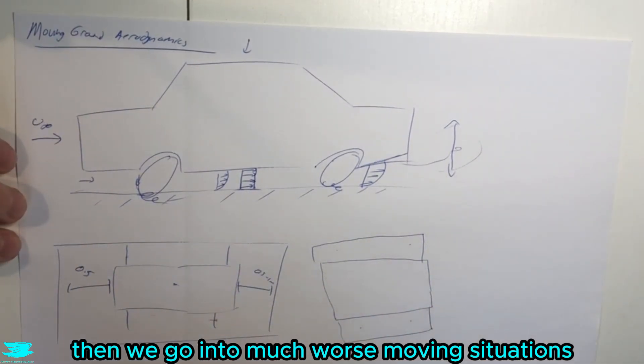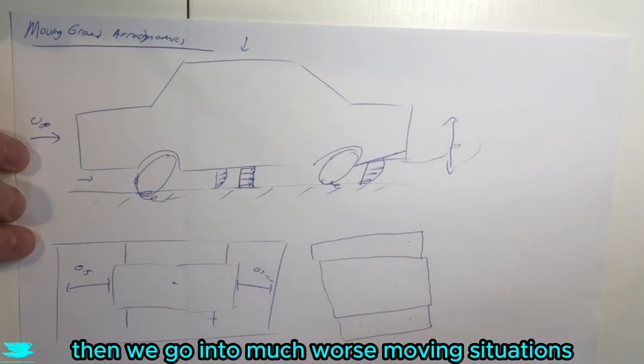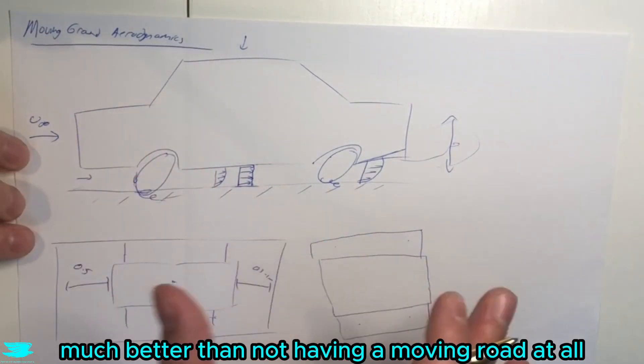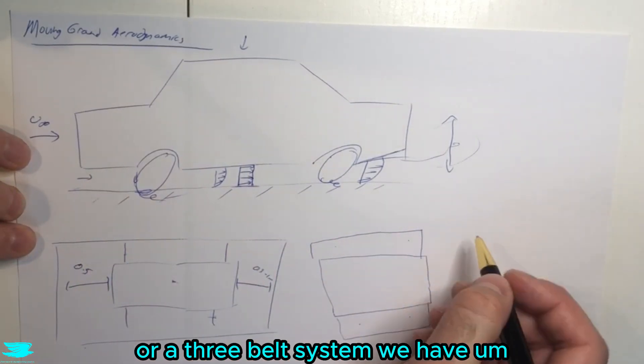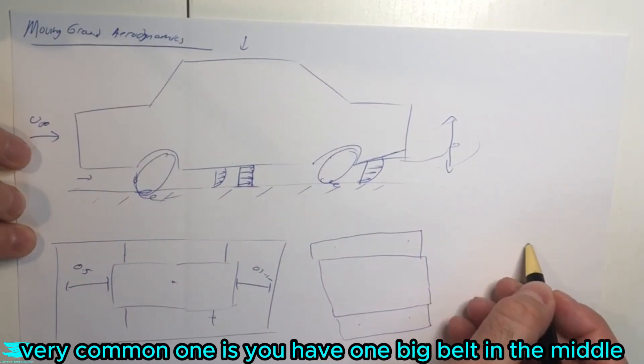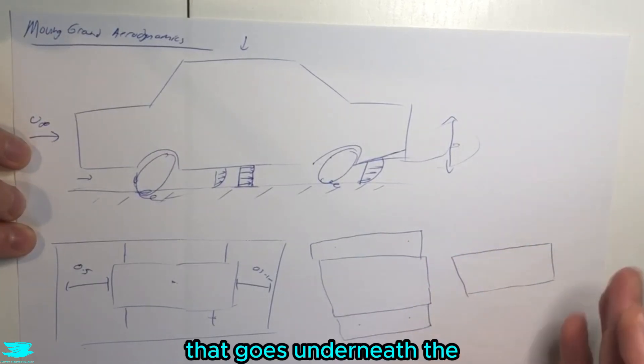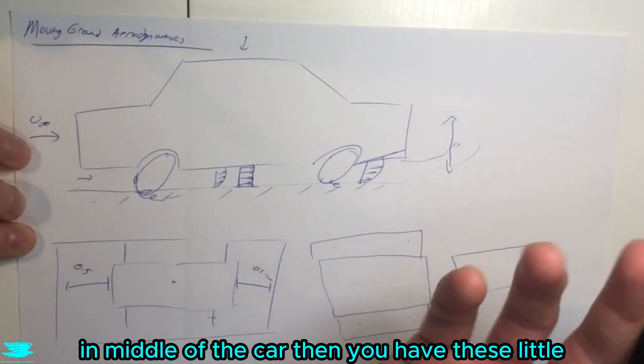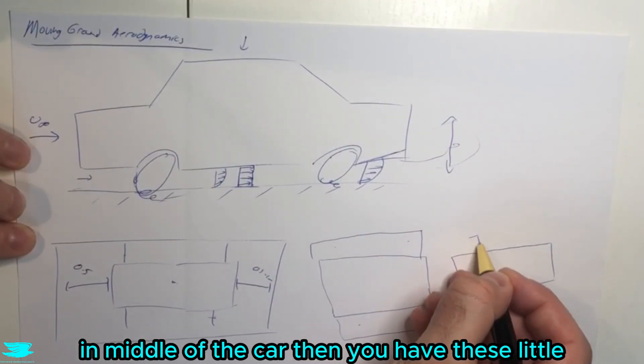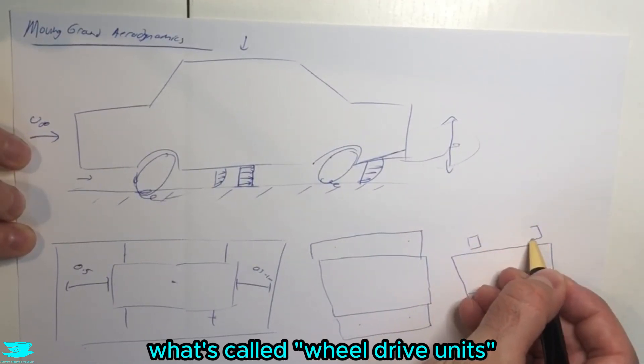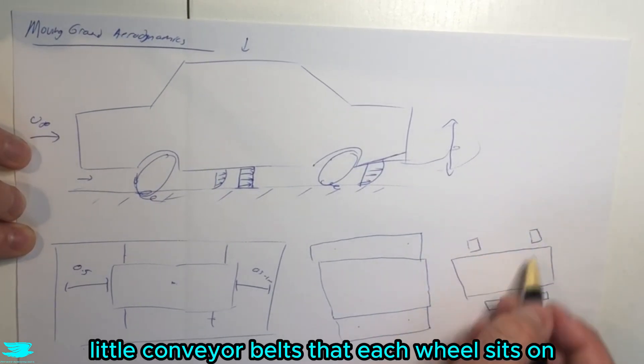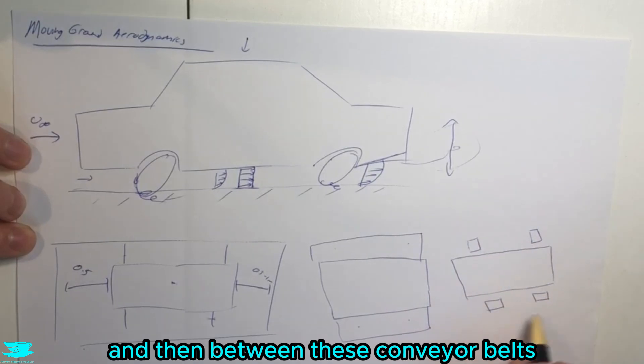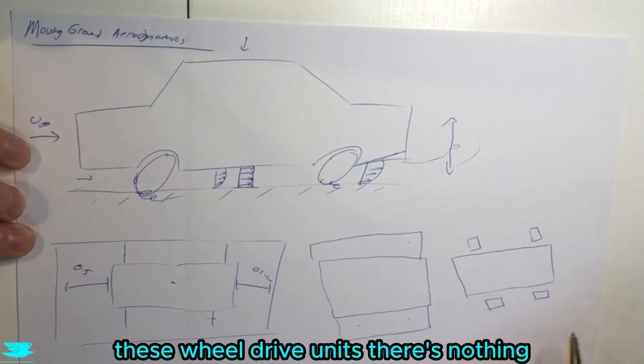Then we go into much worse moving situations - still much better than not having a moving belt at all, but not as good as having one big belt or a three-belt system. A very common one is you have one big belt in the middle that goes underneath the middle of the car. Then you have these little wheel drive units, which are little conveyor belts that each wheel sits on. Between these wheel drive units, there's nothing, there's no moving ground.